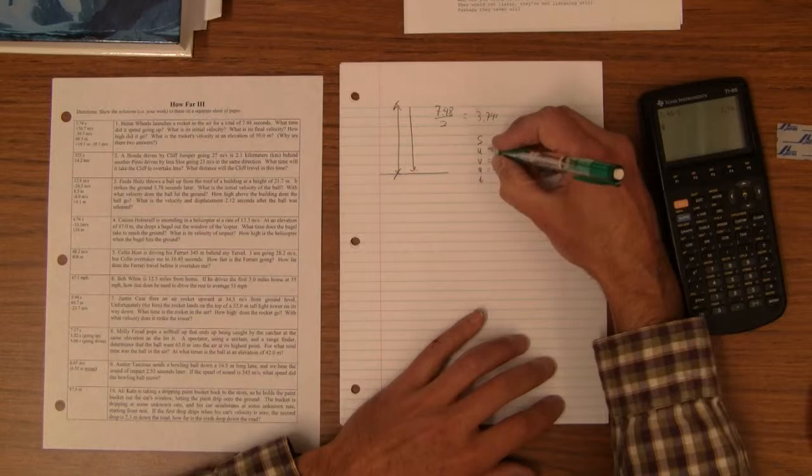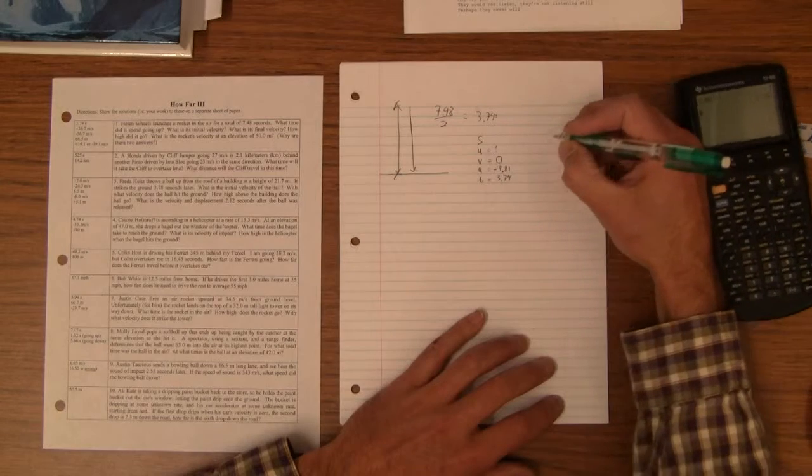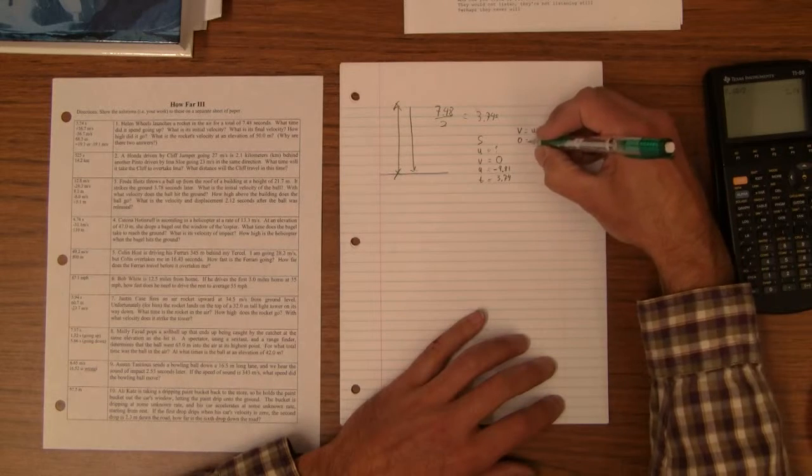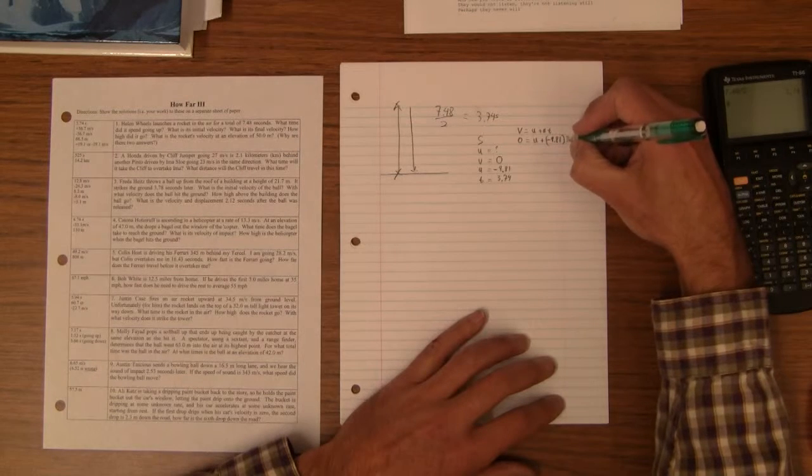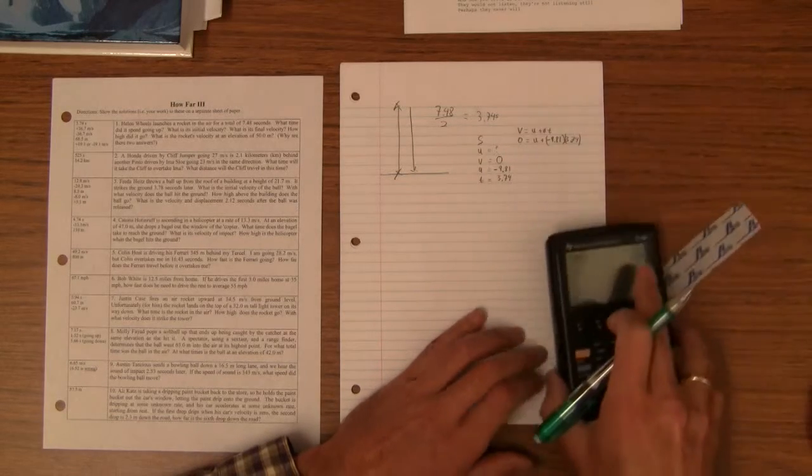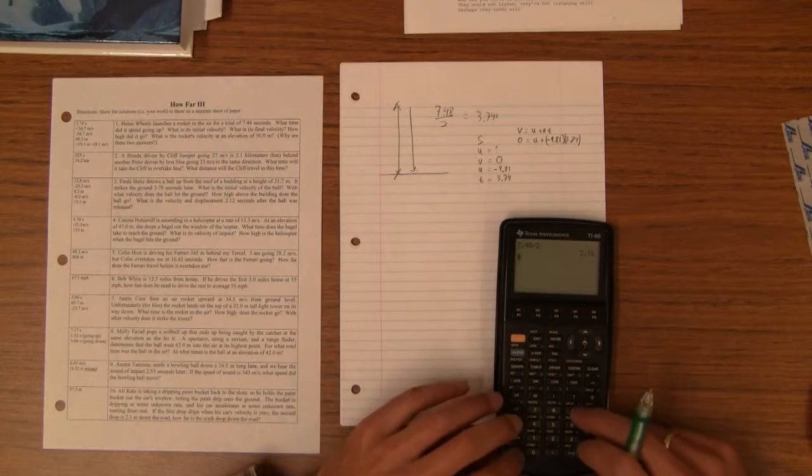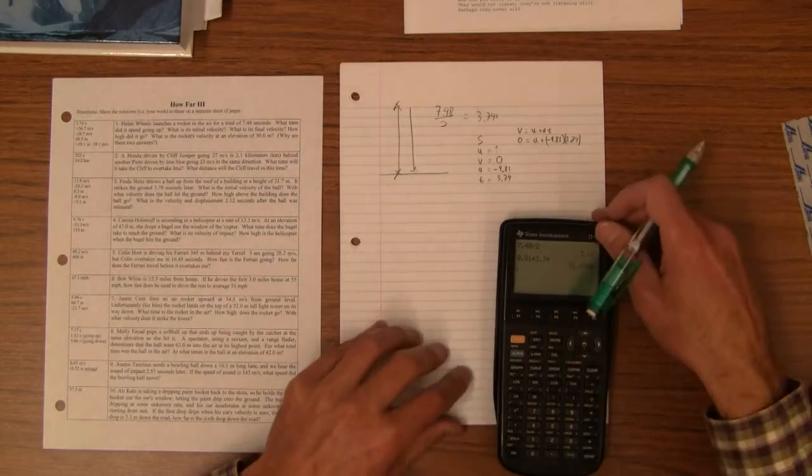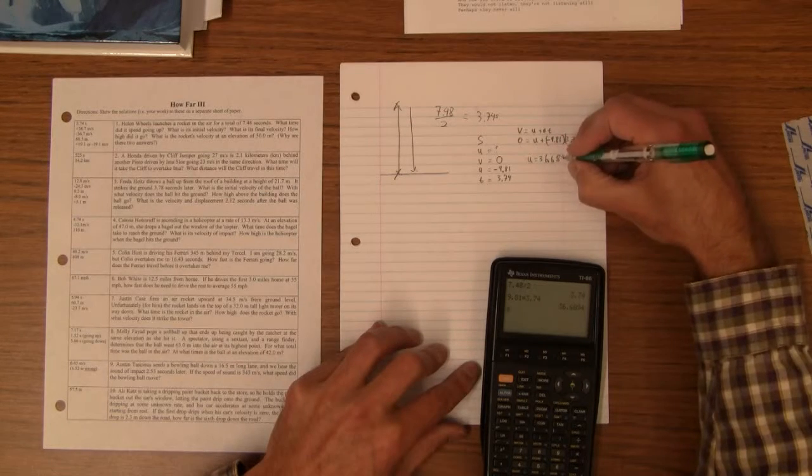The acceleration all the way up will be down 9.81. It's going up, it's slowing down. The initial velocity is what we want to find, and the time is 3.74 seconds. For that one, I'm going to use V is U plus AT. So, zero equals U plus negative 9.81 times 3.74. And so, U is just going to be positive 9.81 times 3.74, which is 36.6894.